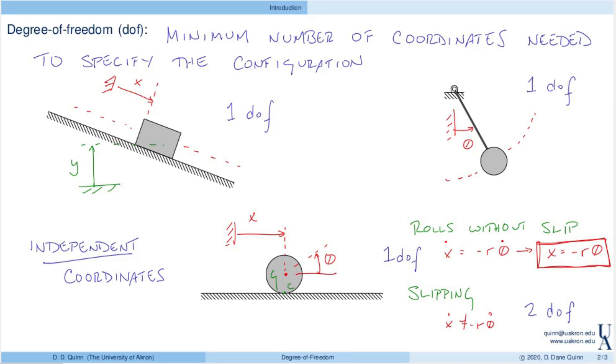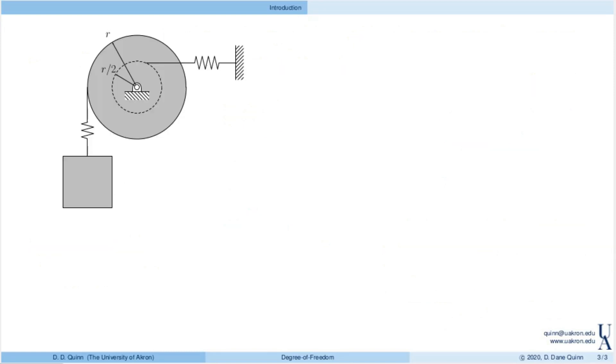Let's look at a more complicated example now. Here I have a disc that's pinned at the center to the ground. There's a spring that's attached to an inner hub. A cable is wrapped around this outer hub and to that cable is attached a spring, and a mass is suspended from the other end of that spring.